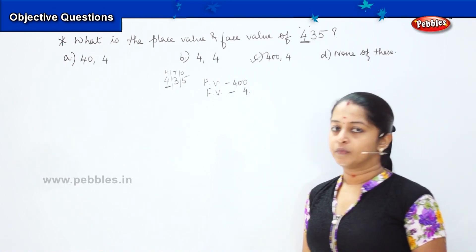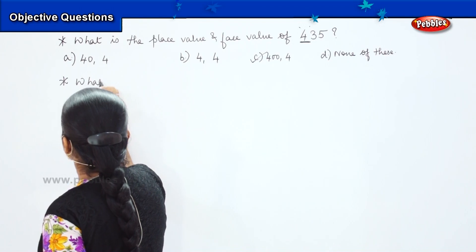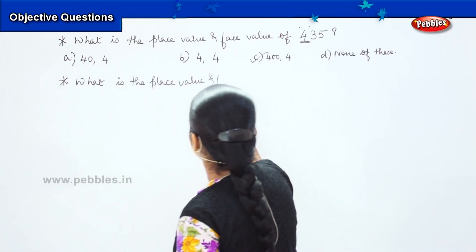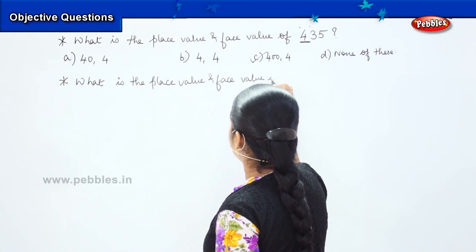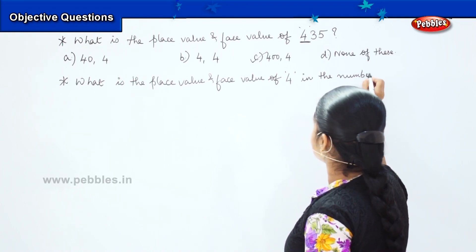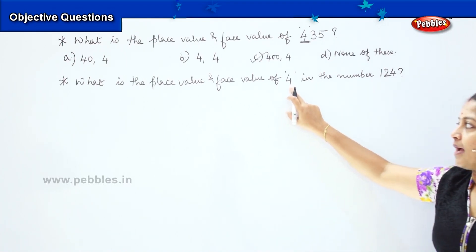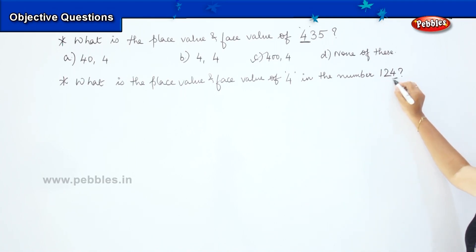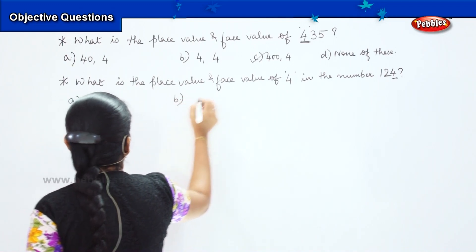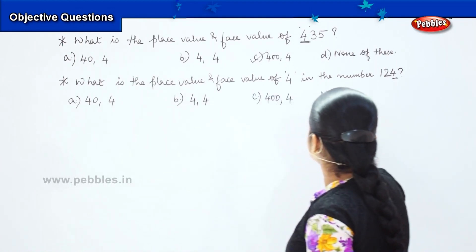Shall we do one more example? My next question says: what is the place value and the face value of 4 in the number 124? And my options are: option A — 40 and 4; option B — 4 and 4; option C — 400 and 4; and option D — none of these.